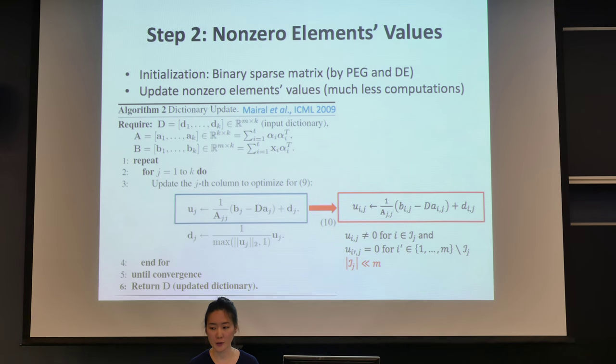And in step two, we only update those non-zero elements values. We use the algorithm that was proposed in 2009. We're using the same update rule, but in this algorithm, they update all the values in D, but here we only update the non-zero values. So it requires much less computations than the existing algorithm.